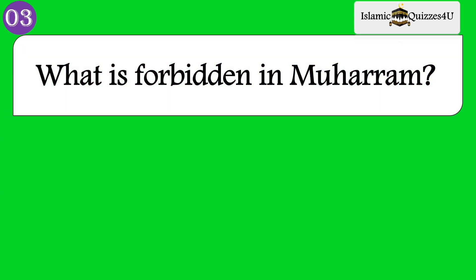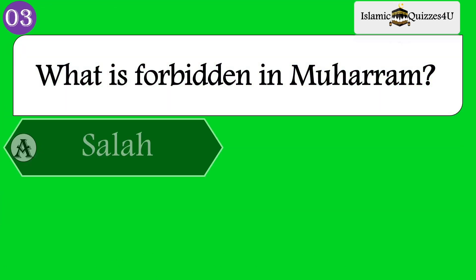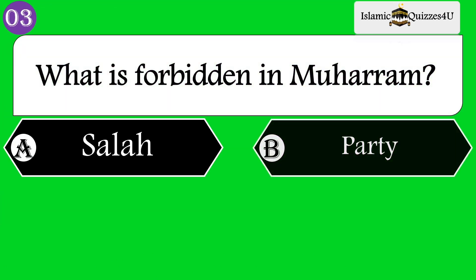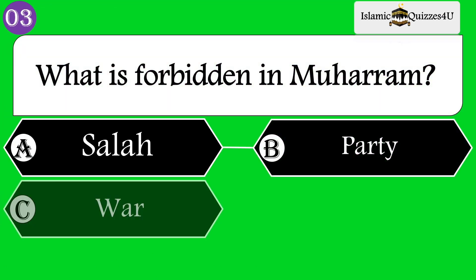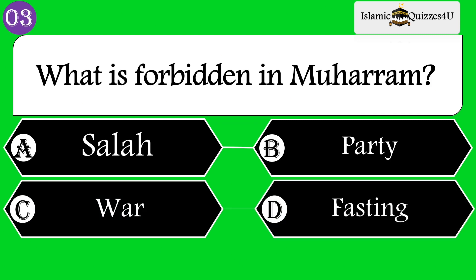Question number 3: What is forbidden in Muharram? Option A: Salah. Option B: Party. Option C: War. Option D: Fasting.